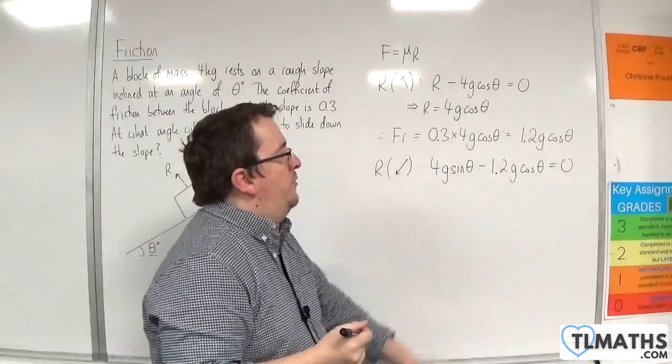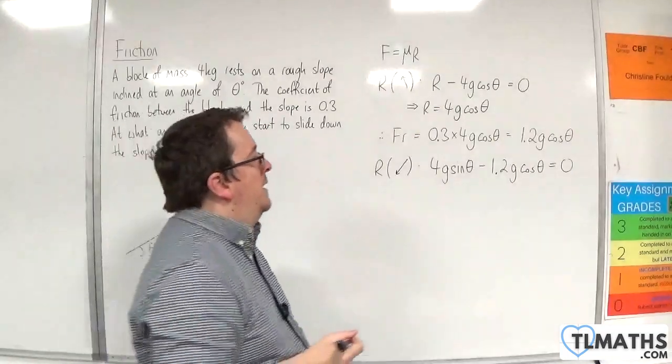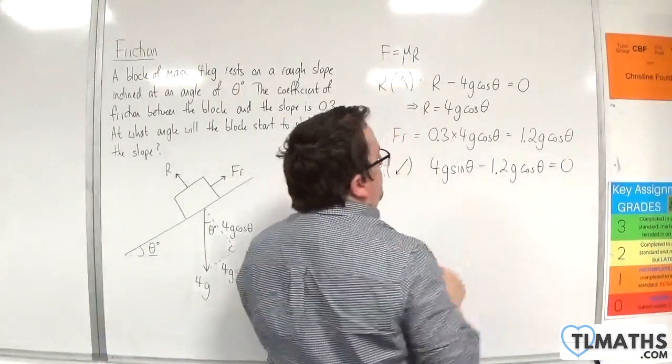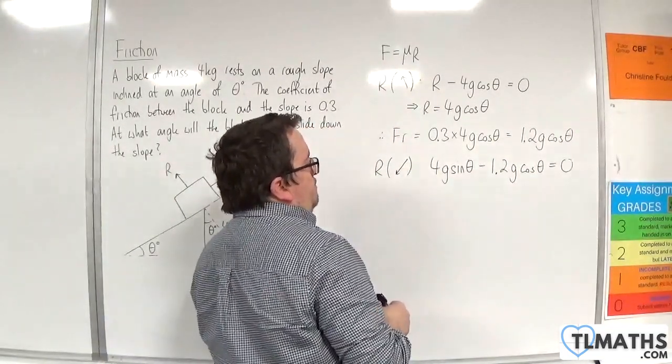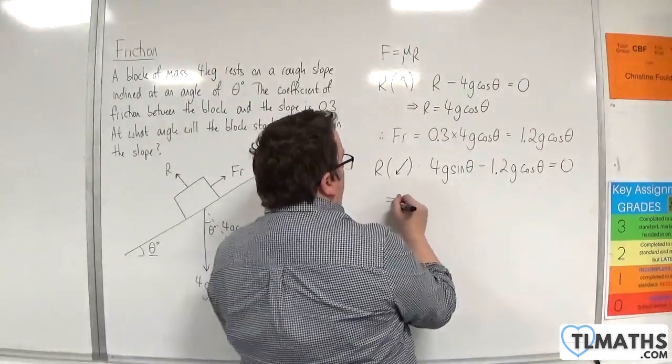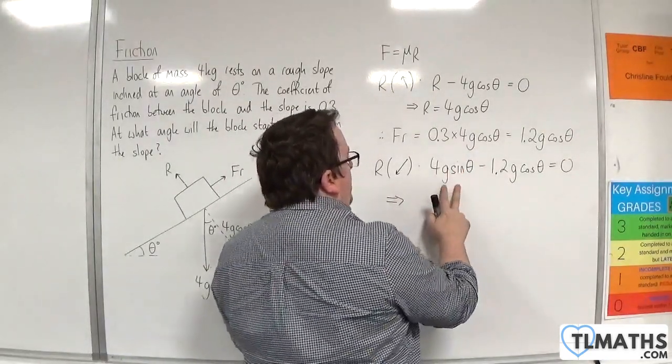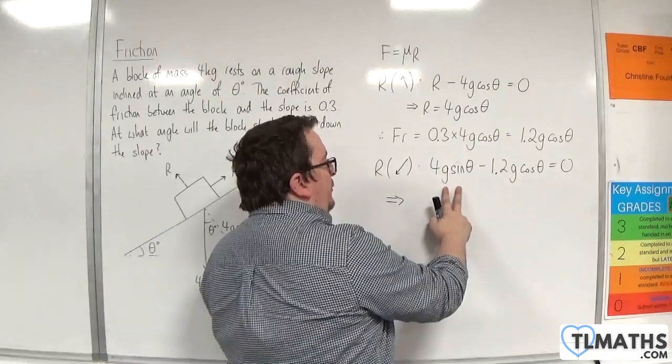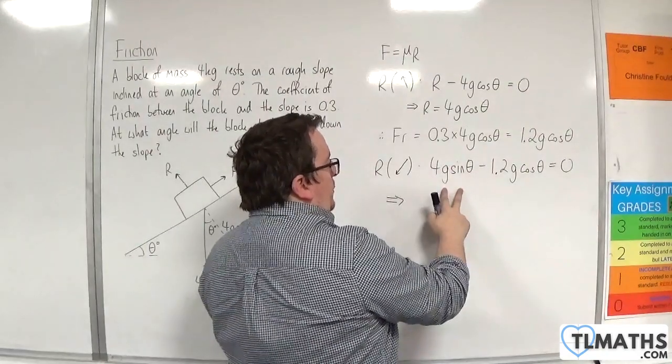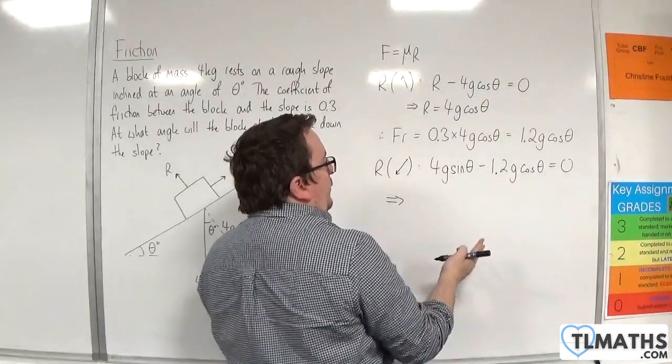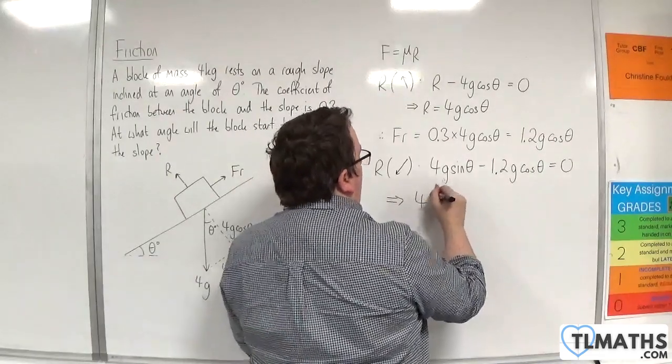Now, we could divide through by g here. In fact, we could divide through by g cosine theta. Because if we do that, then if I divide this by g cosine theta, the g's will cancel. And I'll have sine theta over cosine theta, which is tan theta.